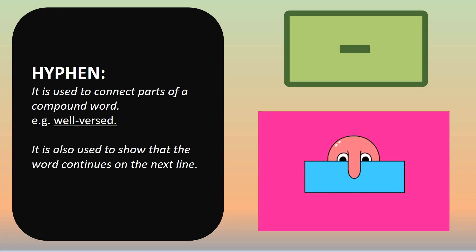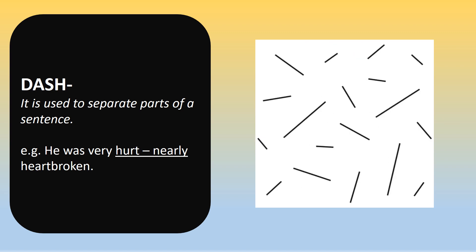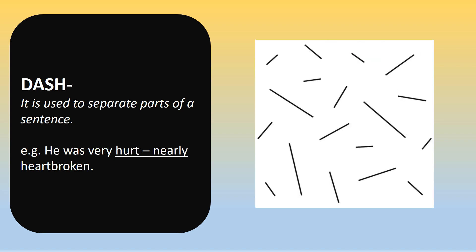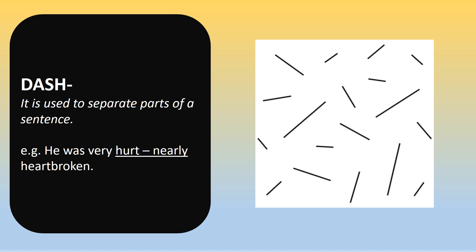Hyphen: it is used to join two separate words to form a single word called a compound word. Example: 'well-versed'. It is also used to show that a word continues on the next line. Dash: the dash is slightly longer than a hyphen. It is used to separate parts of a sentence. Example: 'He was very hurt — nearly heartbroken.'